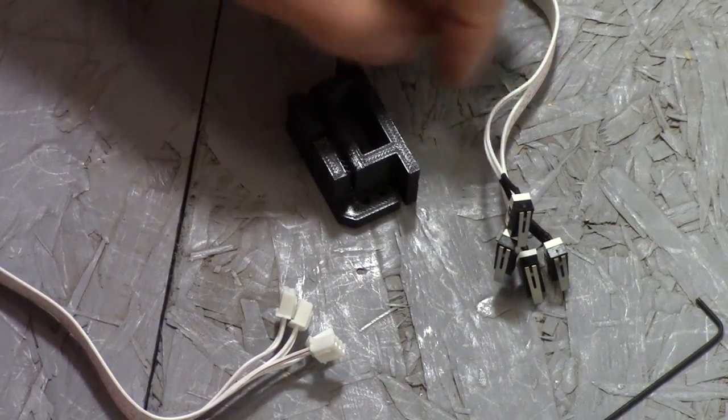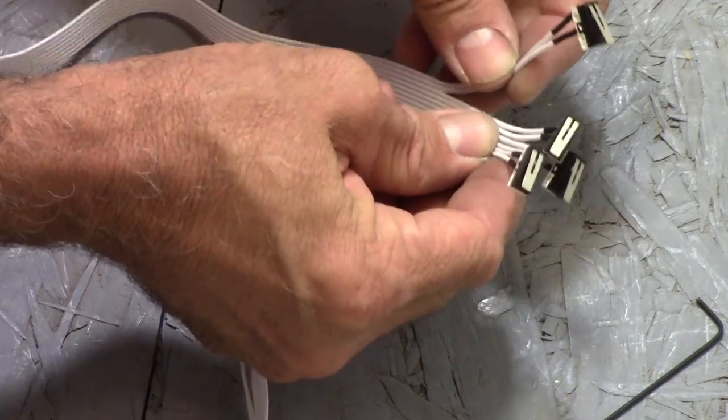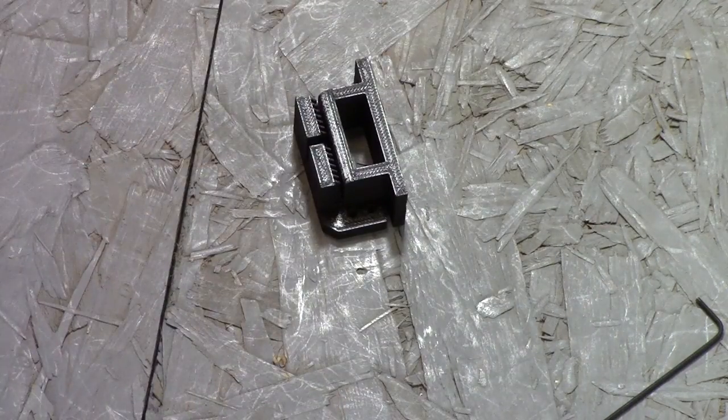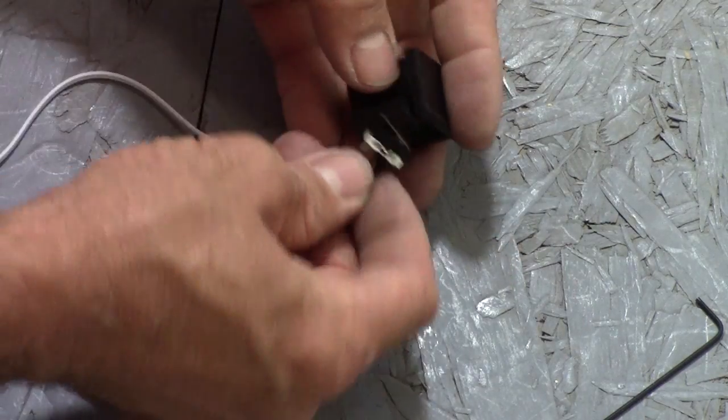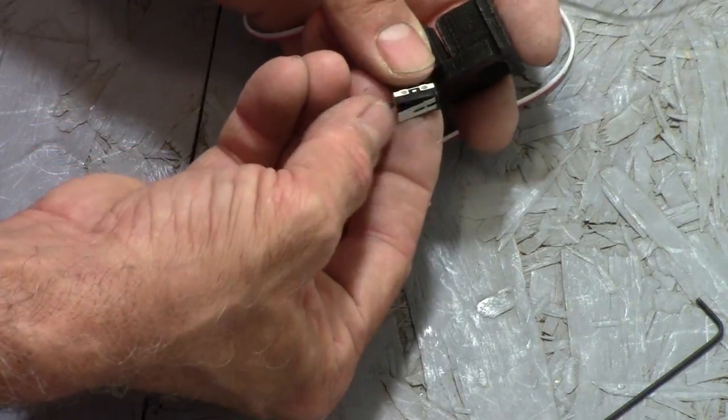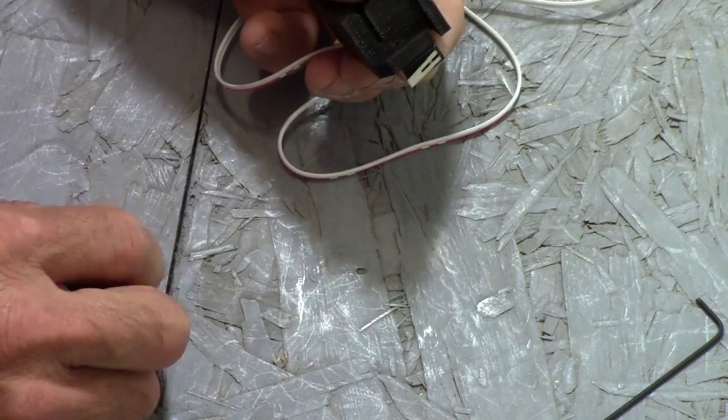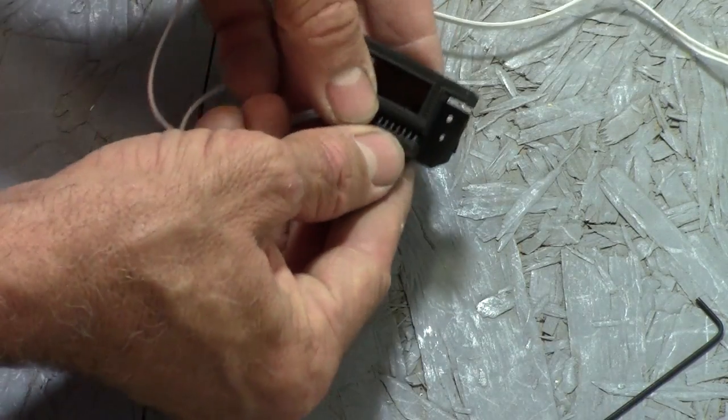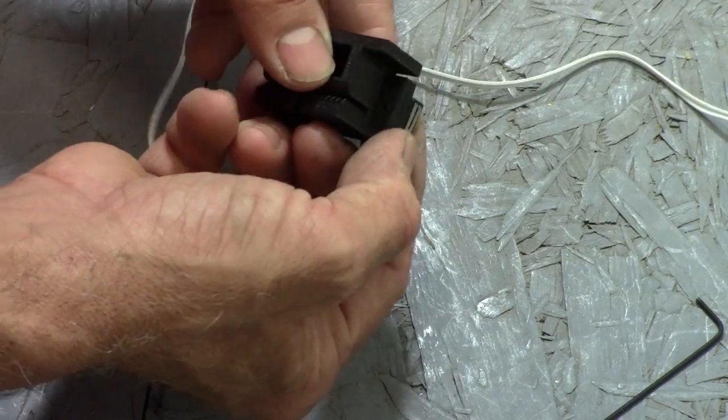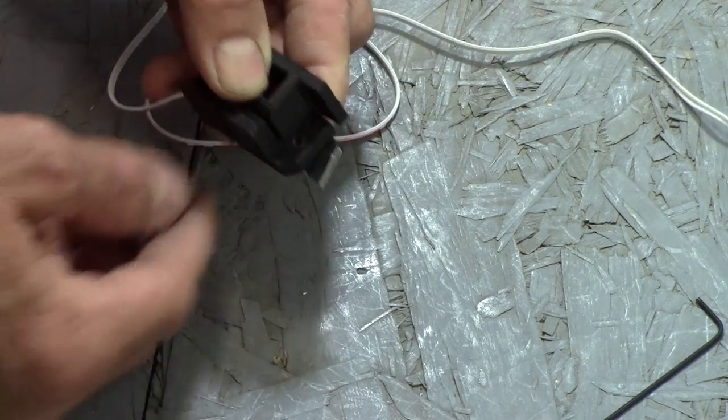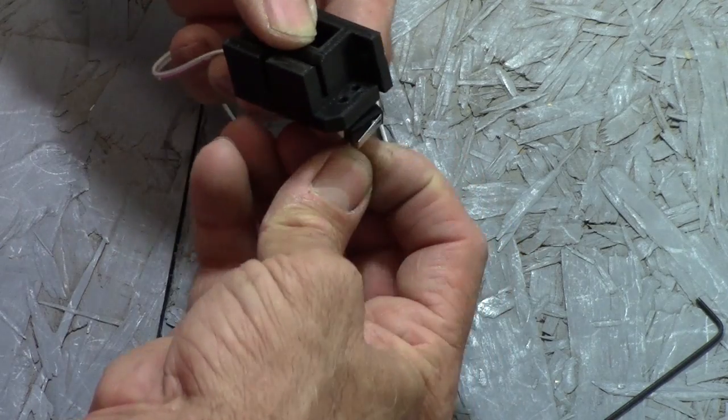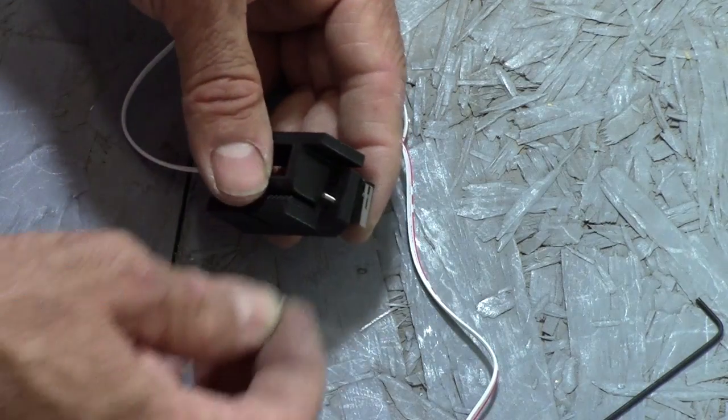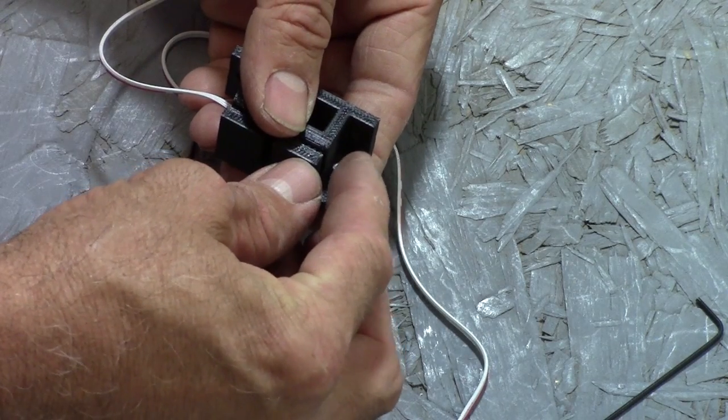Now we'll assemble the end stop for the X axis. I've got the micro switches here, they come all together. I'm just going to strip out one of them. We'll mount one of these up on this assembly, and it's going to mount with the little tab that flips on the thing into that orientation right there. So if you're looking at it on the side where the belt clamps onto, the little tab should sit like so.